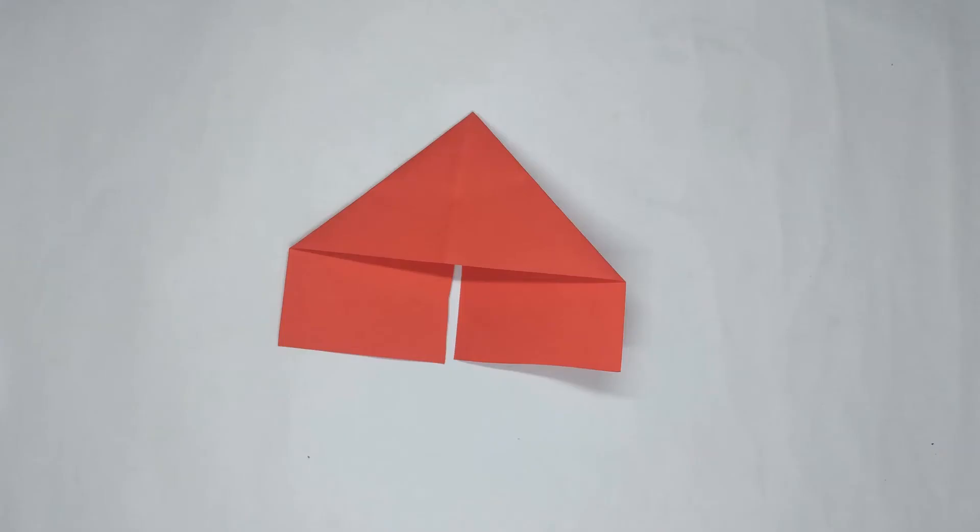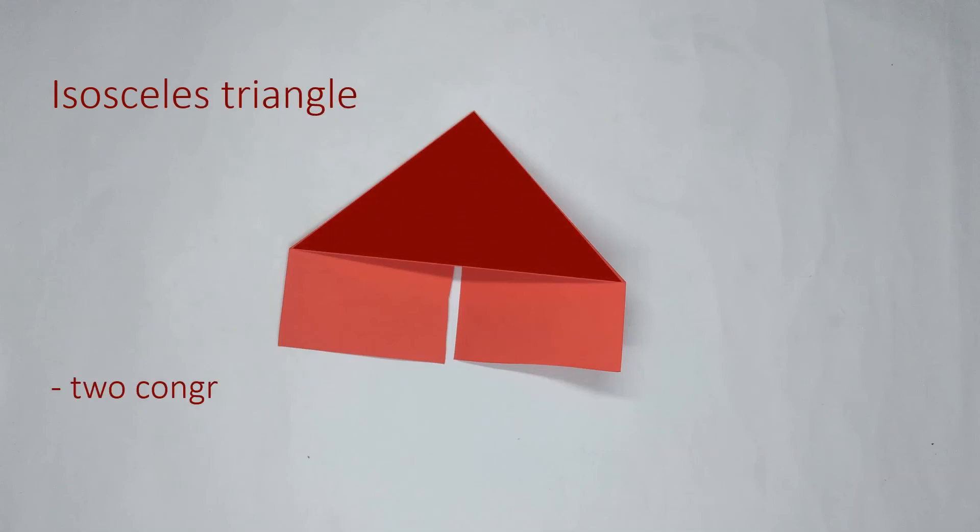Note that we have created an isosceles triangle. They have two congruent sides. See? And, two angles that are equal in measurement. There we go.